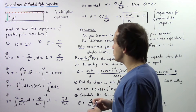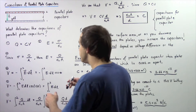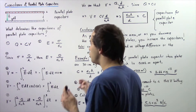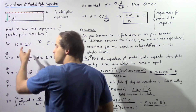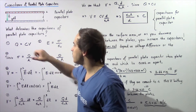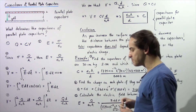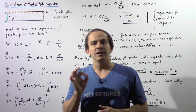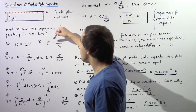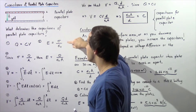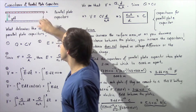In this lecture we essentially want to explore: what determines the capacitance of parallel plate capacitors? Let's begin by recalling two equations we'll need. First, the quantity of charge Q stored on either plate equals the capacitance C multiplied by the voltage difference V between plates one and two. Second, from a previous lecture, the electric field between two parallel plates is uniform and given by the charge density sigma divided by epsilon naught, the permittivity of free space.